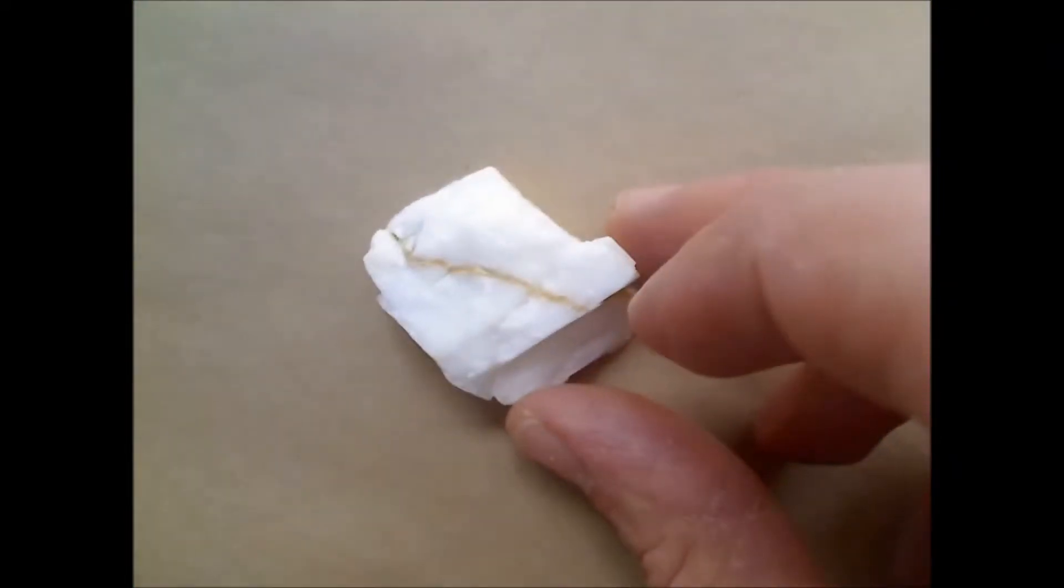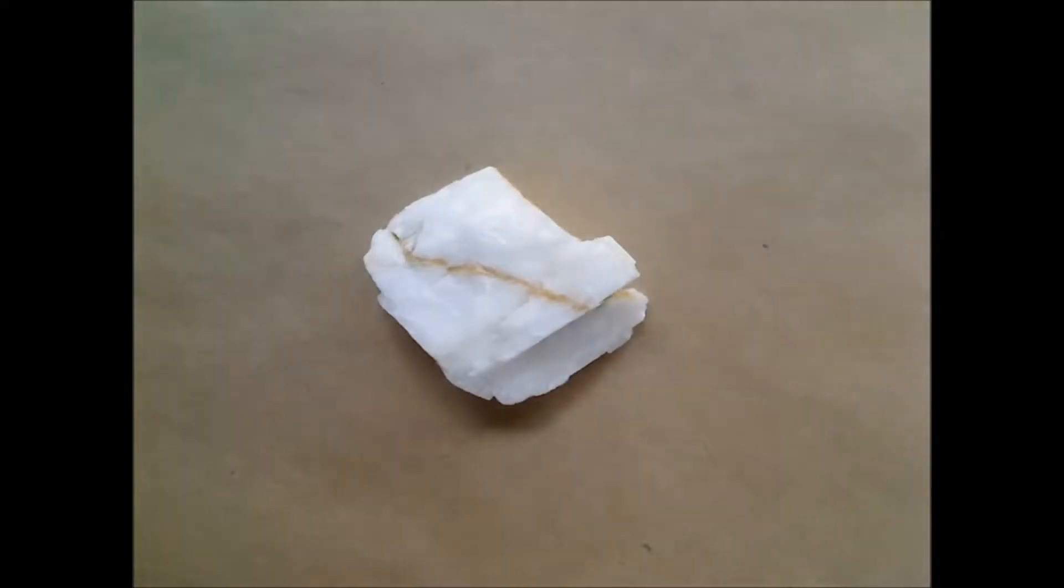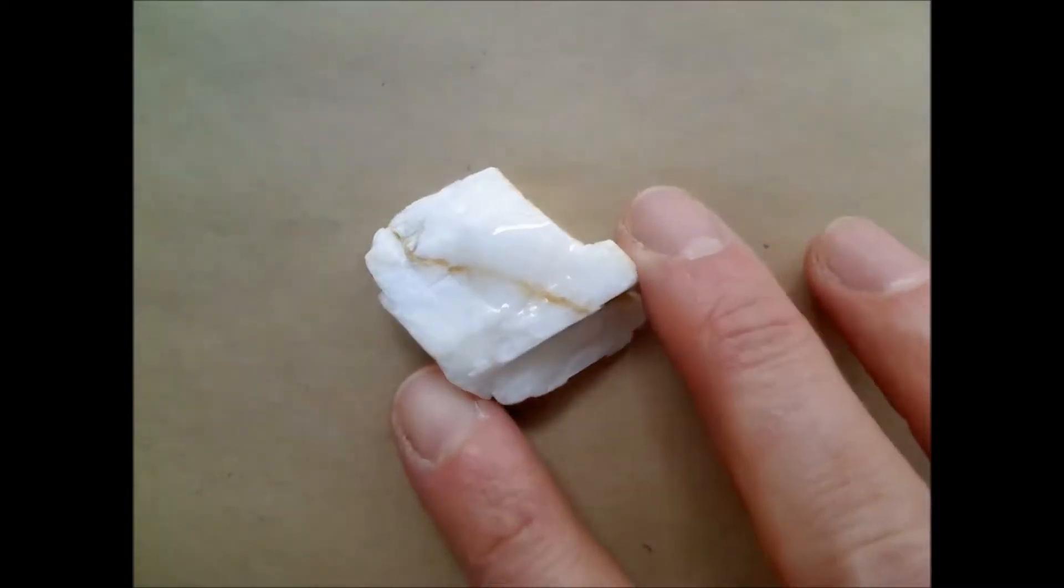So I'm going to jump right in here. Here I have the mineral calcite and I have some hydrochloric acid that I'm going to drop on there and hopefully we can see this fizz. Oh, you can see that quite good. So calcite reacts with acid and you see it as it fizzes.